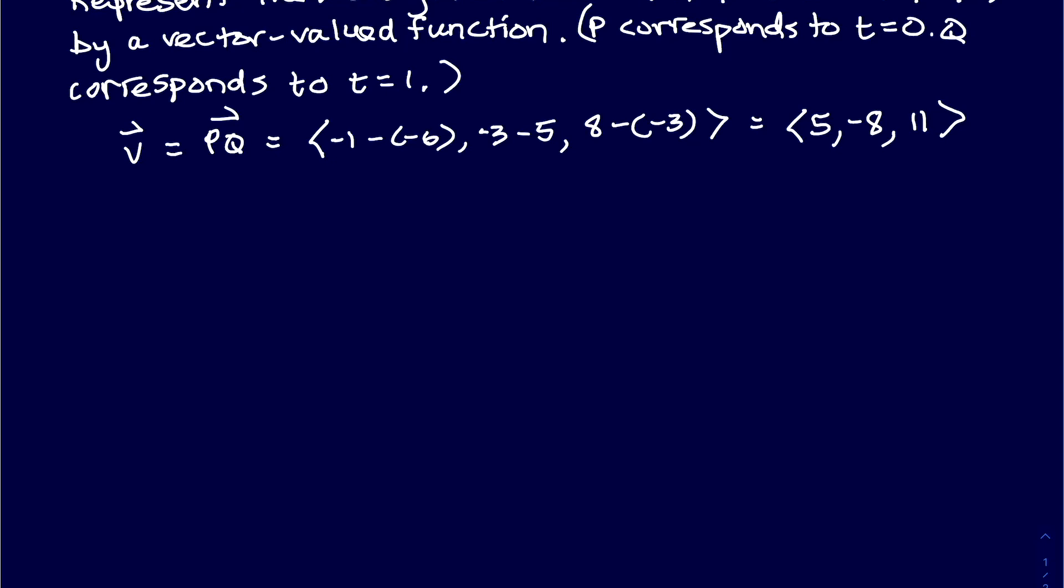And that's going to give us the direction numbers. So these are the direction numbers for the line segment, which would just be the direction numbers for the line passing through P and Q.